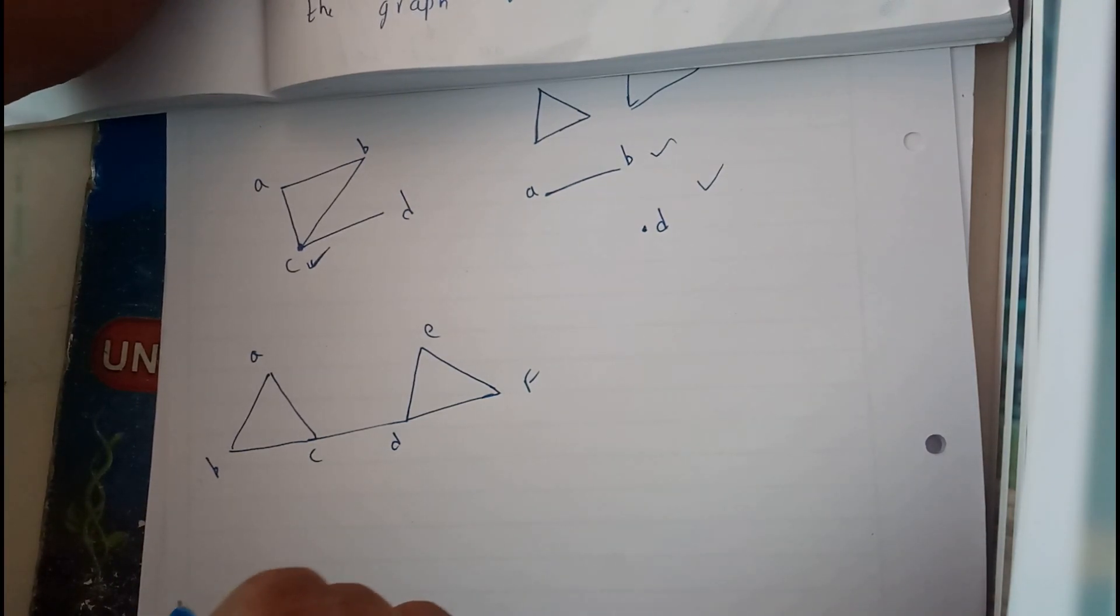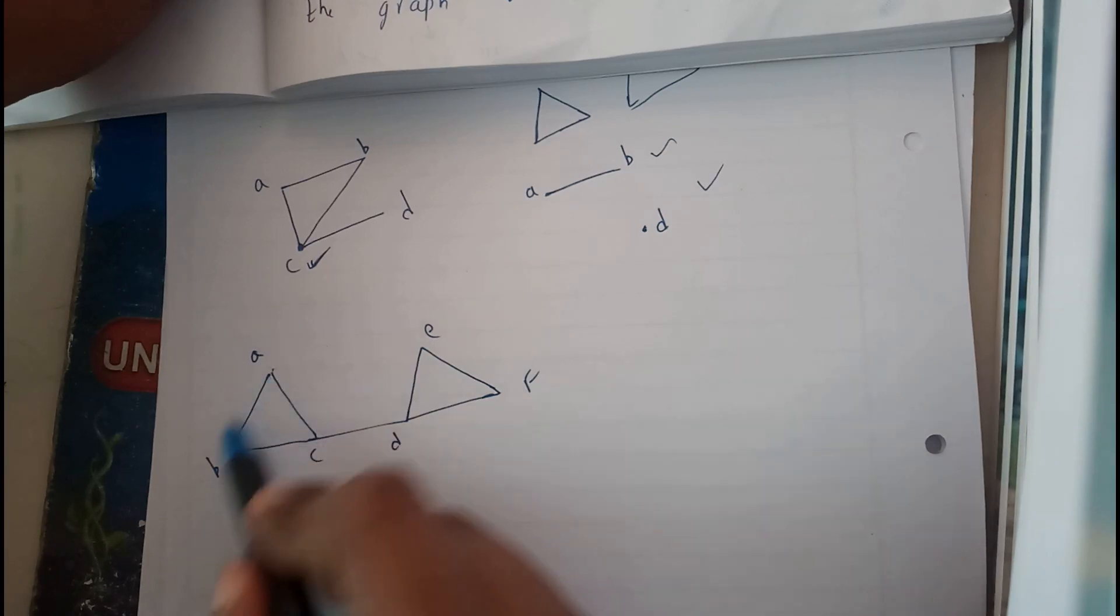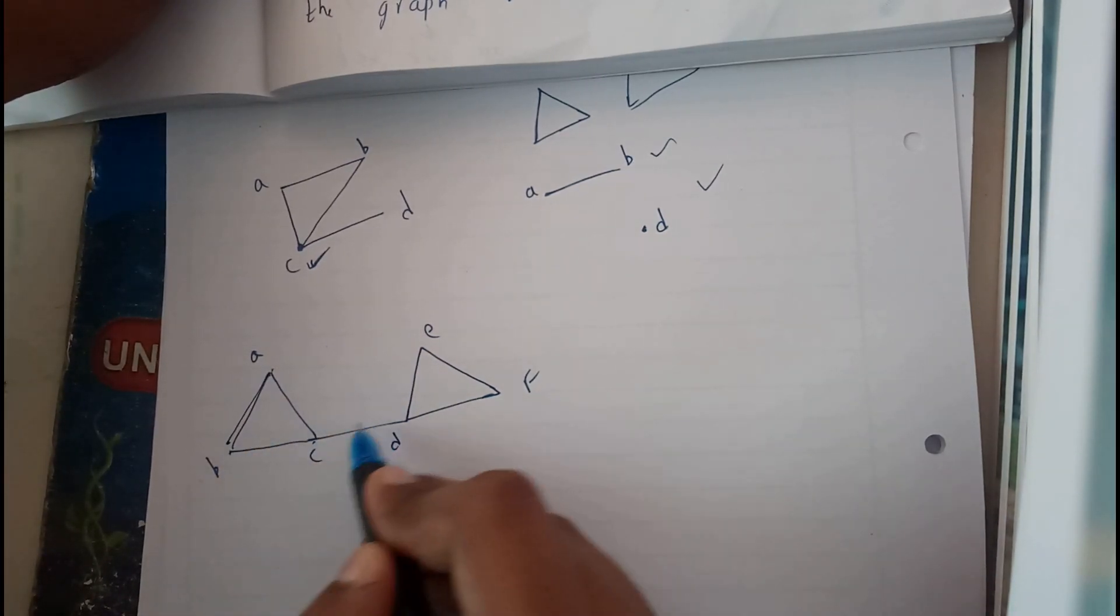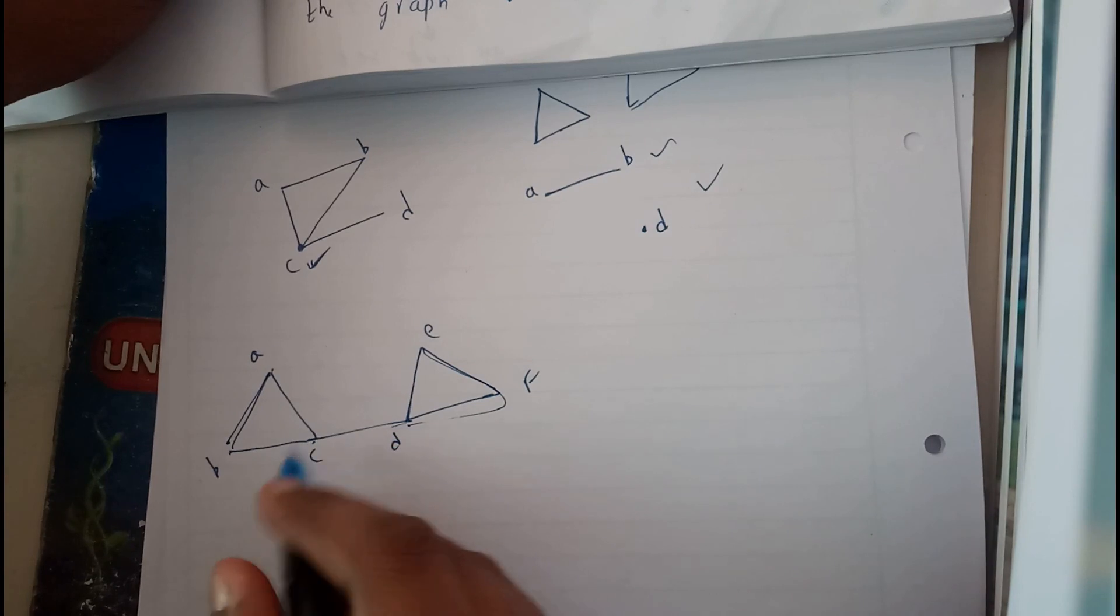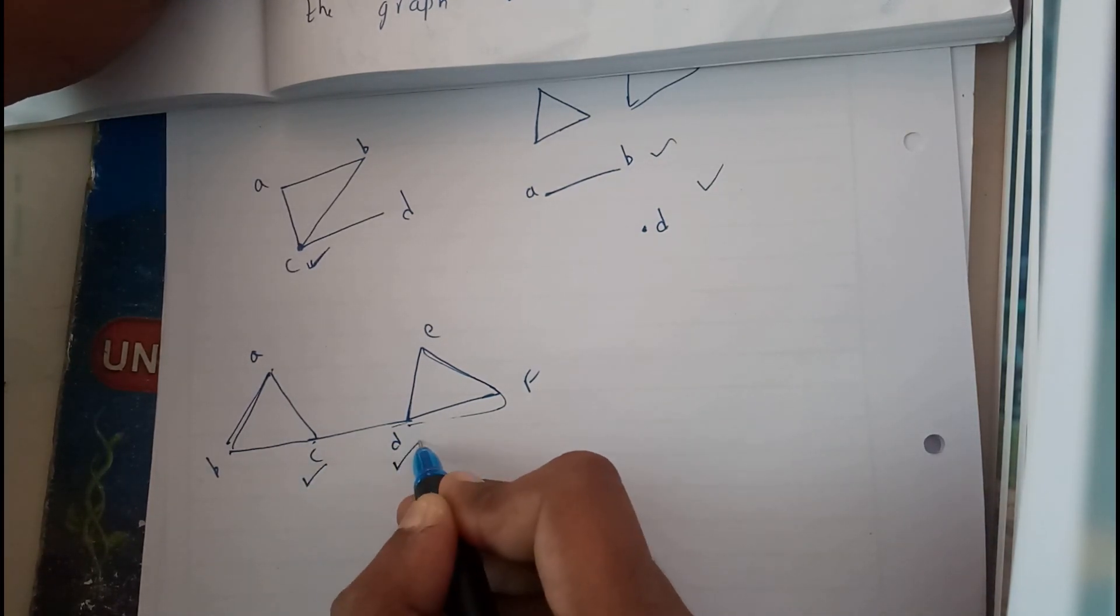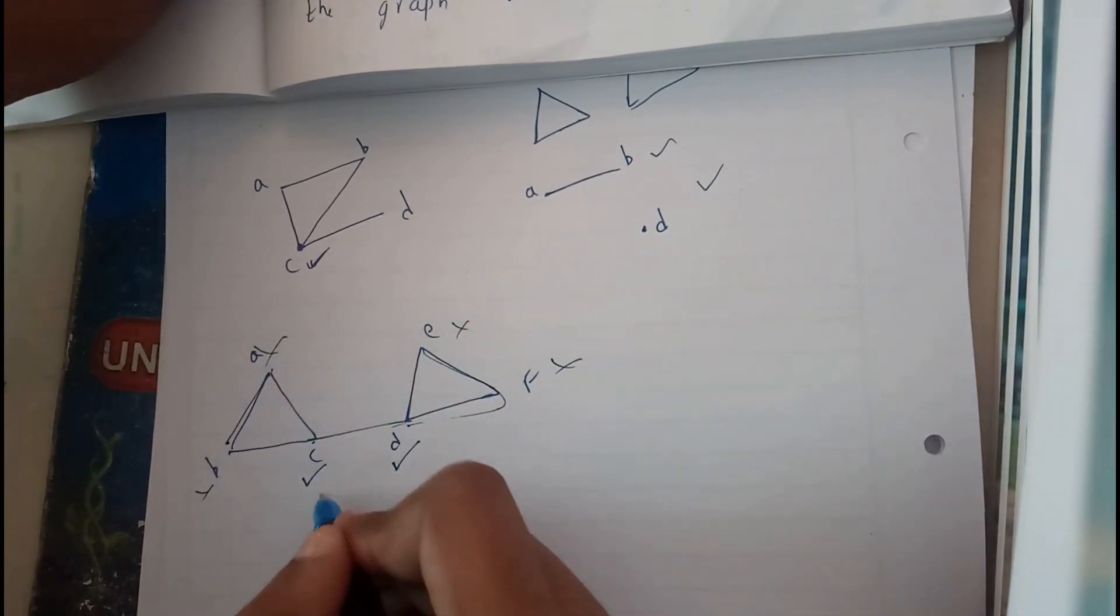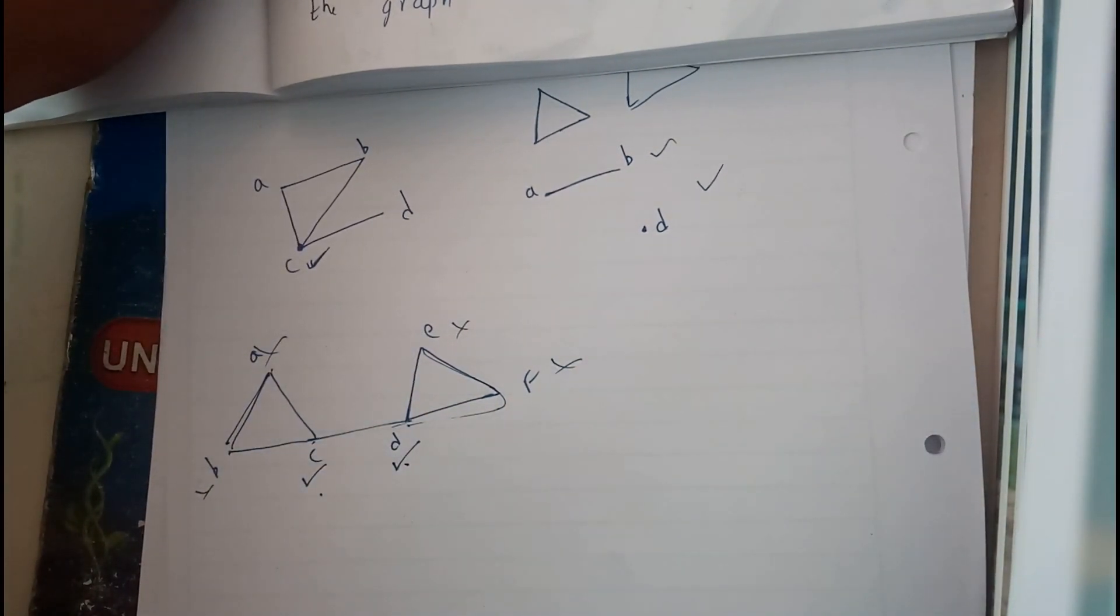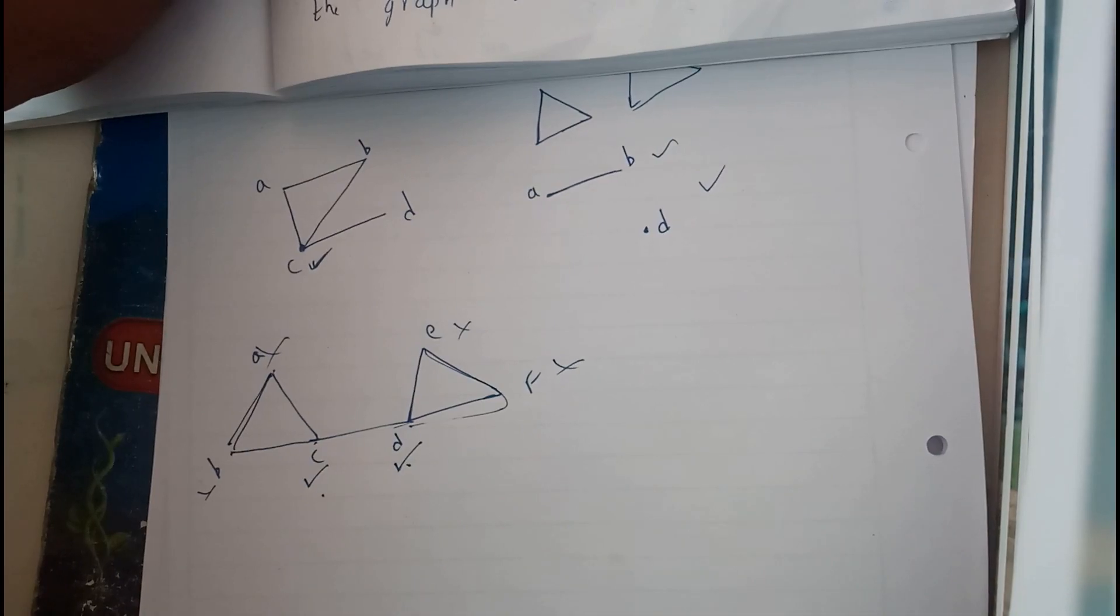So I need to remove one vertex so that it becomes disjoint. If I remove a, nothing. B, nothing. C, this will be here and this will be left out. So c is a cut vertex. Similarly, d, not e, not f, not a, not b. Here c and d are the cut vertices.